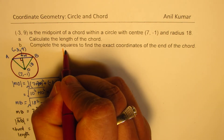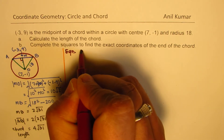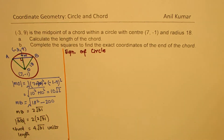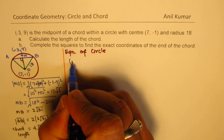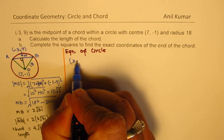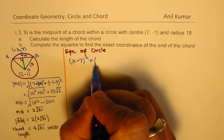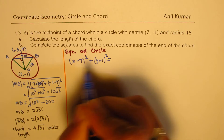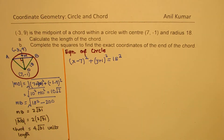Let's find the equation of the circle first. Since the center is at seven, minus one, it will be (x − 7) squared plus (y + 1) squared equals 18 squared, which is the radius squared. So we get the equation of the circle.